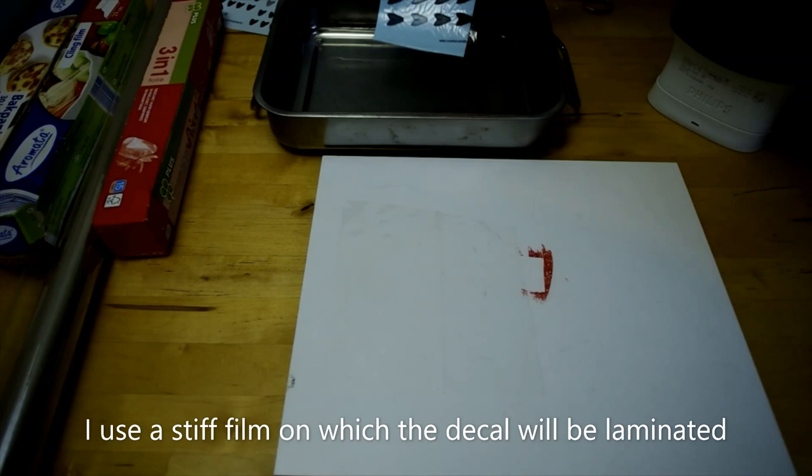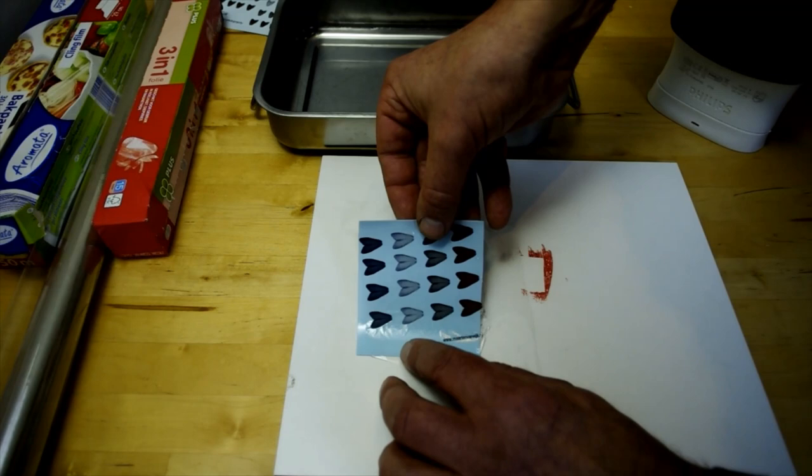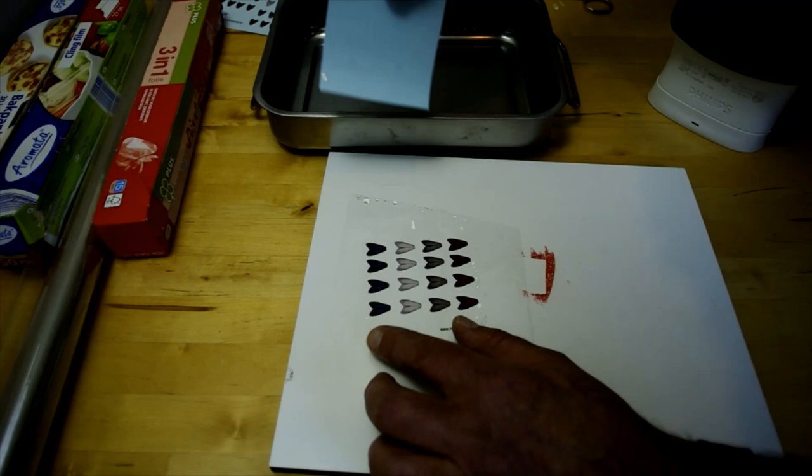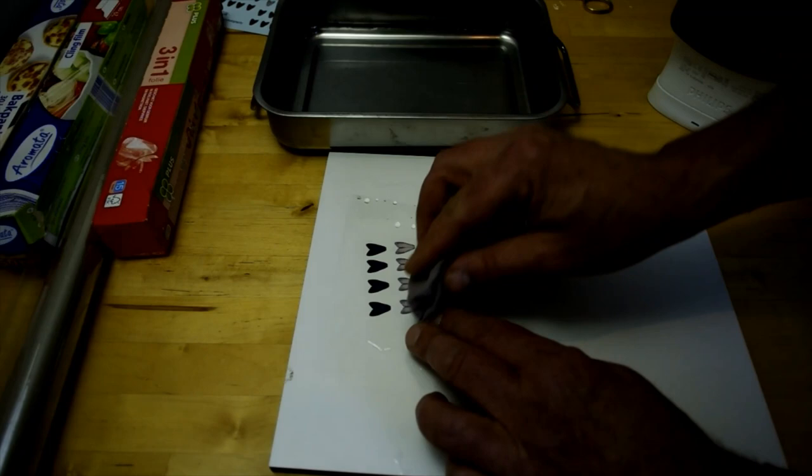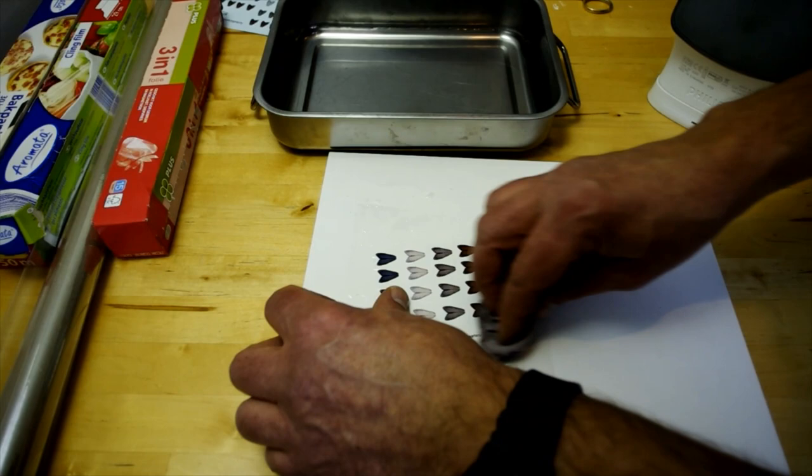Cut out the piece you want to use and drop it in a bowl of water. Quickly the decal will come loose from the backing. Dry with a cloth and laminate it using the iron.